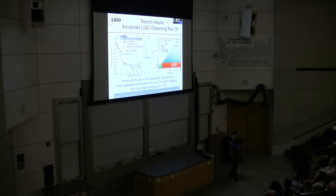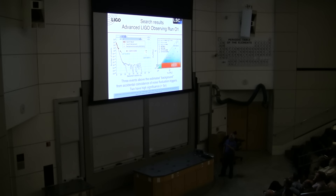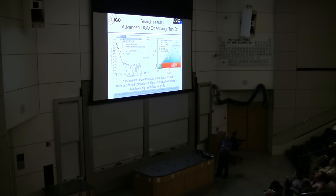We observed for six months in 2015 and 2016. We found a whole pile of events consistent with our estimated background from instrumental noise. But then we found three events consistent with high-mass binary black hole systems, standing out above the background. At least two of them were five-sigma events. The first is GW150914 — September 14, 2015 — a day I will always remember. The second was Boxing Day. The third, LVT 151012, was only a two-sigma event.